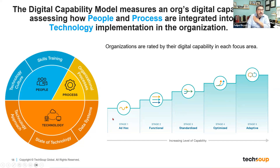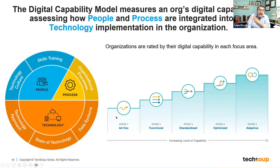Within each one of these categories there are different stages — ad hoc is the very beginning, where you're just kind of reactionary. Then you move your way up to becoming more optimized and adaptive, where you're being more proactive. The digital assessment tool gives you a rating of where you are and increasing capability within each one. You might be completely optimized and adaptive in one area and reactive in another — which is okay. No one is ever 100% in everything.